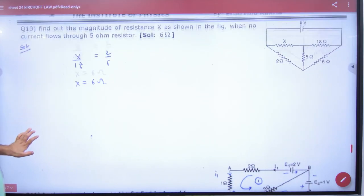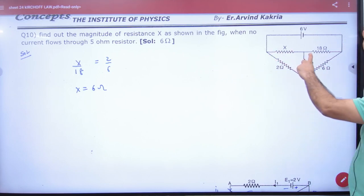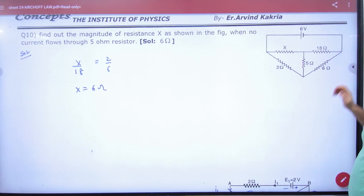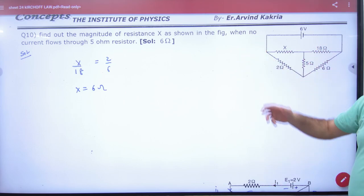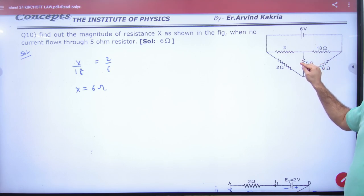Next, he is saying let's remove x when no current flows through 5 ohm. Then 2 upon 6 is equal to x upon 18, x remove x. Okay, so a balanced Wheatstone Bridge, there is no current. He is saying 5 ohm, there is no current. What does this balance Wheatstone Bridge? There is no galvanometer.